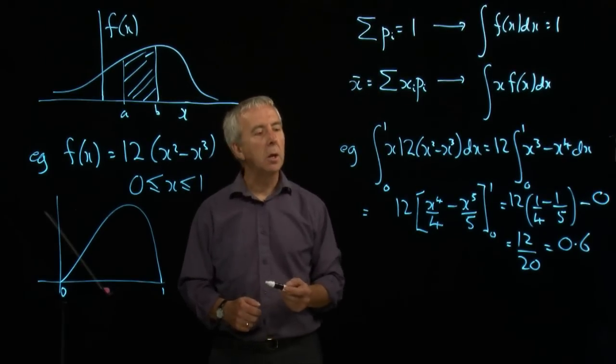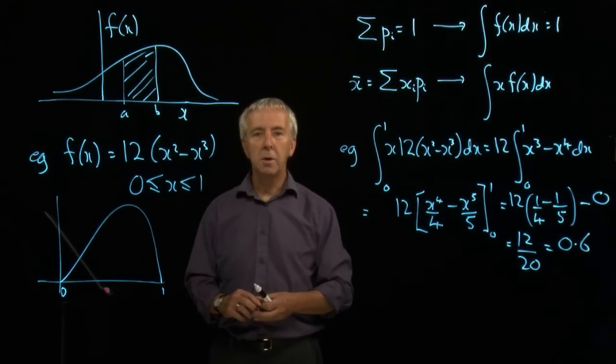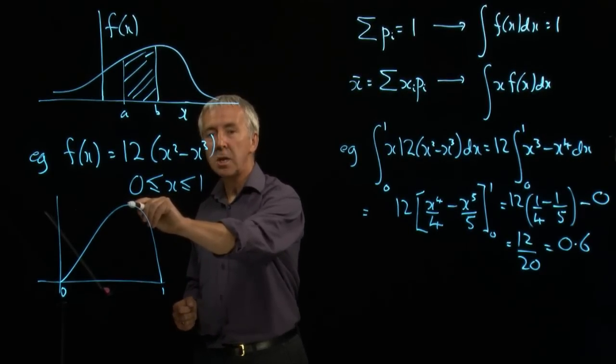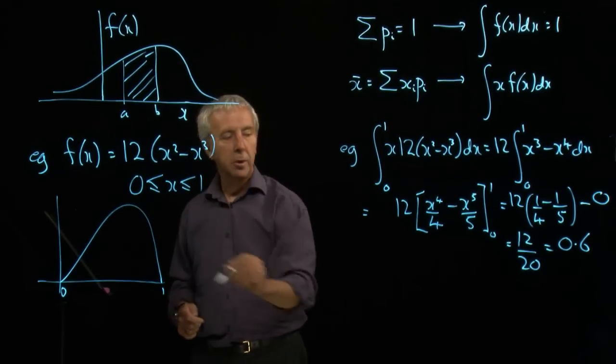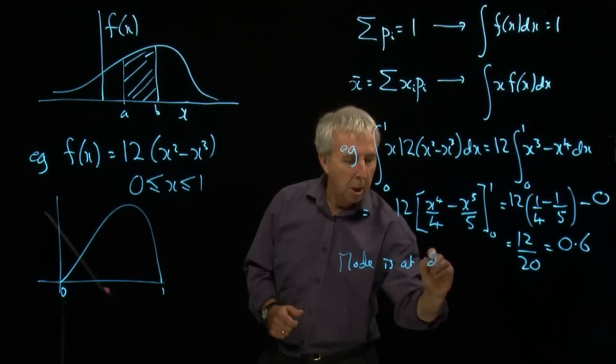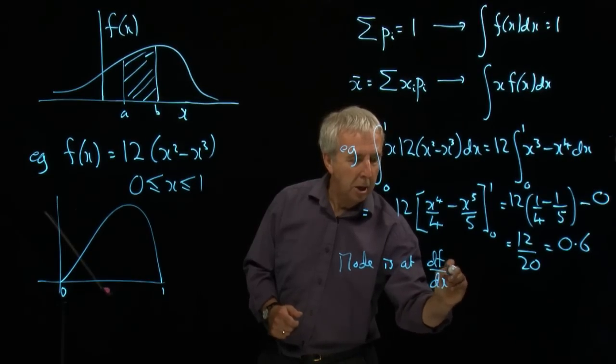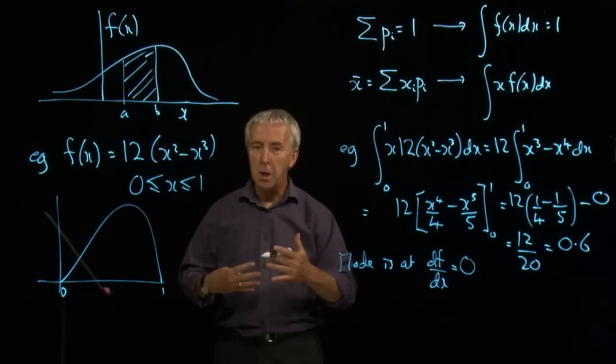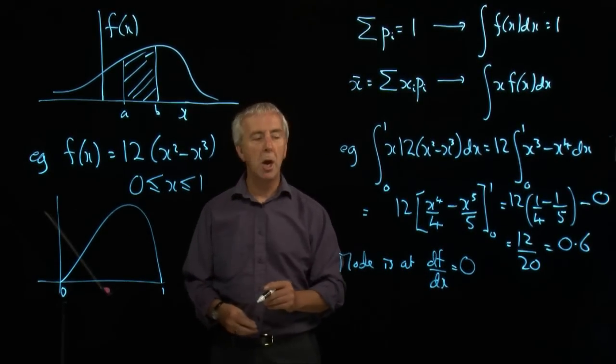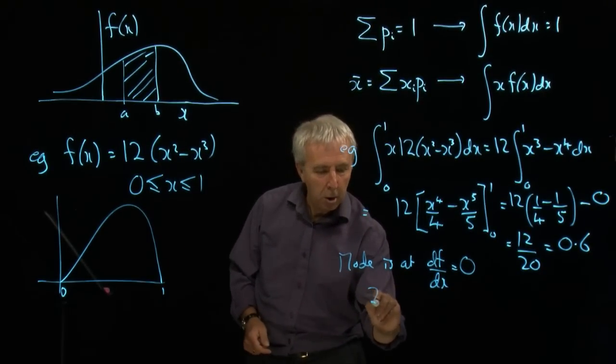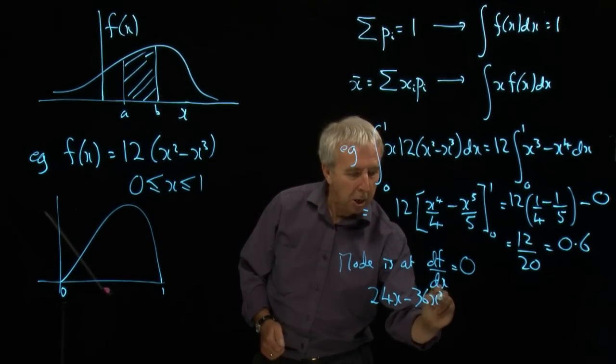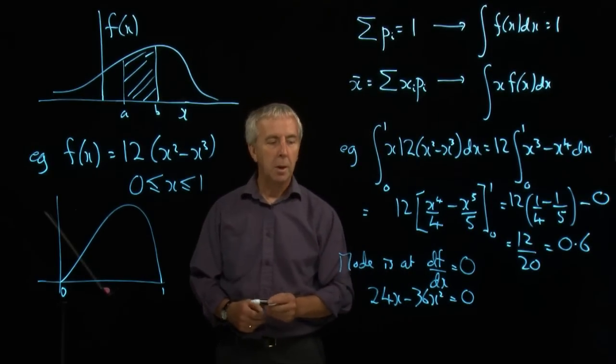The other thing that we can easily do with continuous distributions is find the mode. The mode is, if you like, the most popular, the most common. And in this context, what we mean is that value of x which has the highest density function value. So the mode is at df/dx = 0. In other words, instead of integrating now, we're going the other way. We're differentiating to find out the maximum of this curve. And if I differentiate that particular function, 12x² goes to 24x. 12x³ goes to 36x².